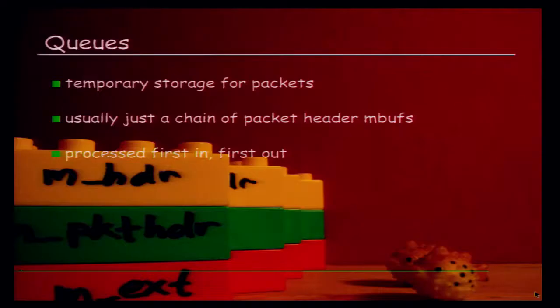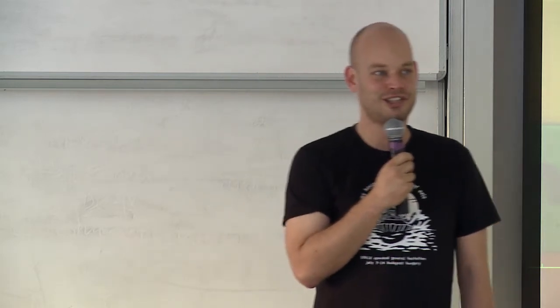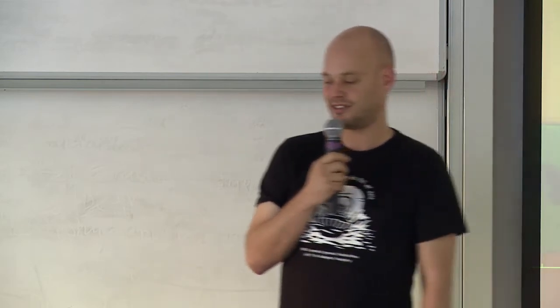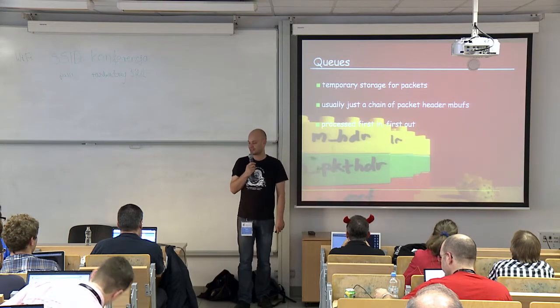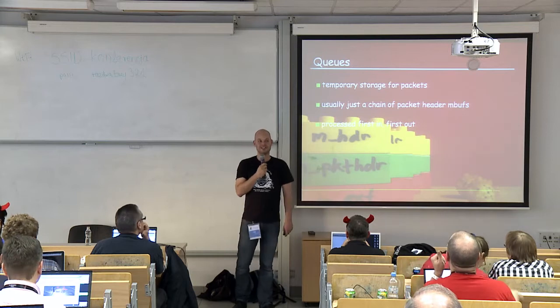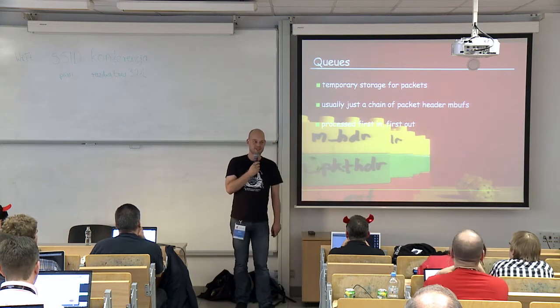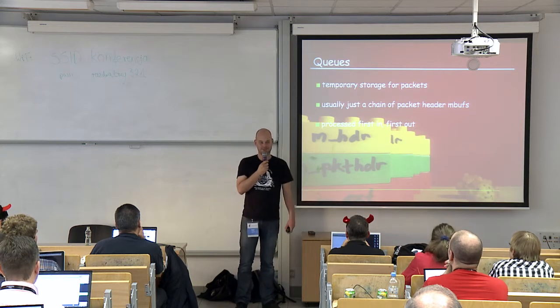When we're talking about queuing, we're obviously talking about queues. Queues are really simple — they're a temporary storage for packets all over the stack. A queue is usually nothing more than a chain of mbufs using the mbuf next pointers in the mbuf structure. Traditionally they've always been processed in a FIFO manner — the first packet queued was the first one dequeued.